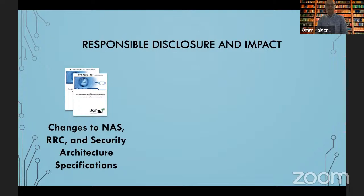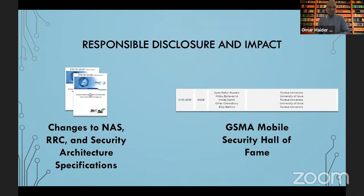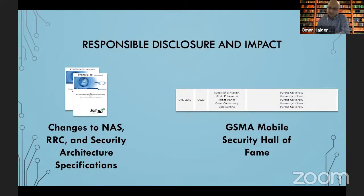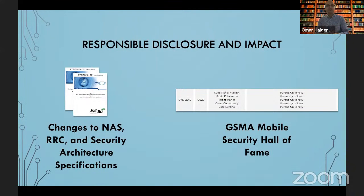We responsibly disclosed these attacks to the 3GPP, which is the standards body for cellular networks. As mentioned, we were inducted into the Hall of Fame for finding these bugs. Next, the question is: can this adversarial framework find all kinds of attacks? The answer is actually no. Most of the attacks we can identify are trace properties, which talk about one execution of the system. But there are cases when you have to talk about multiple executions - an example would be side-channel attacks. These are called non-interference properties, for which you need to talk about pairs of executions, not a single execution. Torpedo is one such attack.